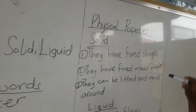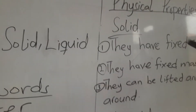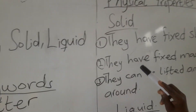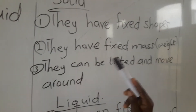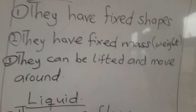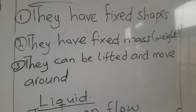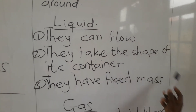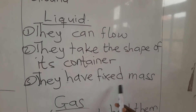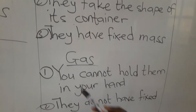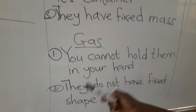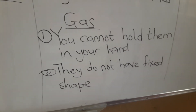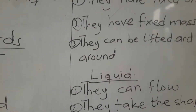Physical properties of the states of matter: Solid — they have fixed shape, fixed mass, and can be lifted and moved around. Liquid — they can flow, they can take the shape of each container, and they have fixed mass. Gas — you cannot hold them in your hands and they do not have fixed shape.